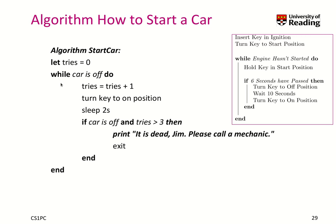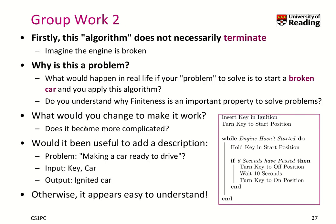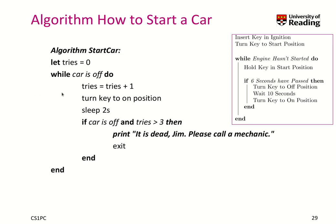Let's trace this algorithm. At the beginning, tries is zero and the car is off — that's what we assume. But even if the car were already turned on, our algorithm would guarantee that at the end it is ignited, because we check 'is the car off?' If it's not off, we finish the iteration and we are done. The input is a key and a car; the output is an ignited car — it doesn't say the car has to be turned off initially.